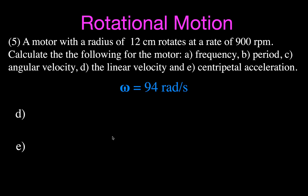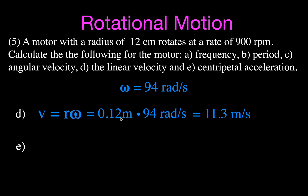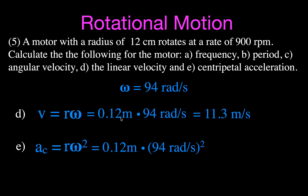For letter d, linear velocity equals r times omega: 0.12 m times 94 radians per second gives 11.3 meters per second. For letter e, centripetal acceleration equals r times omega squared: 0.12 times 94 squared gives approximately 1,060 meters per second squared — a very high centripetal acceleration.